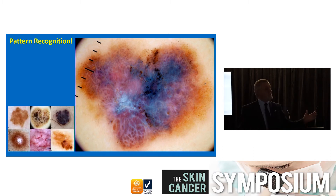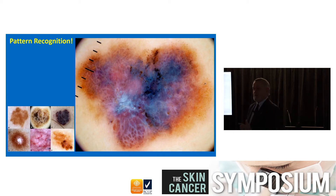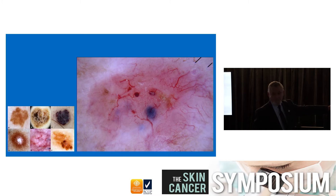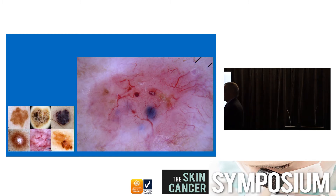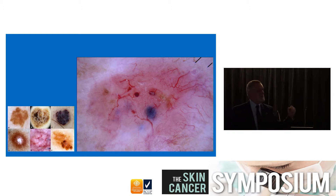You recognize the melanoma by pattern recognition - it's not one of the five benign things. Similarly, you know a BCC by pattern recognition - it's not one of those five benign things either. The more experience you get, the more things you recognize by pattern recognition, even abnormal things. It doesn't get hard once you've looked at thousands and thousands of things.